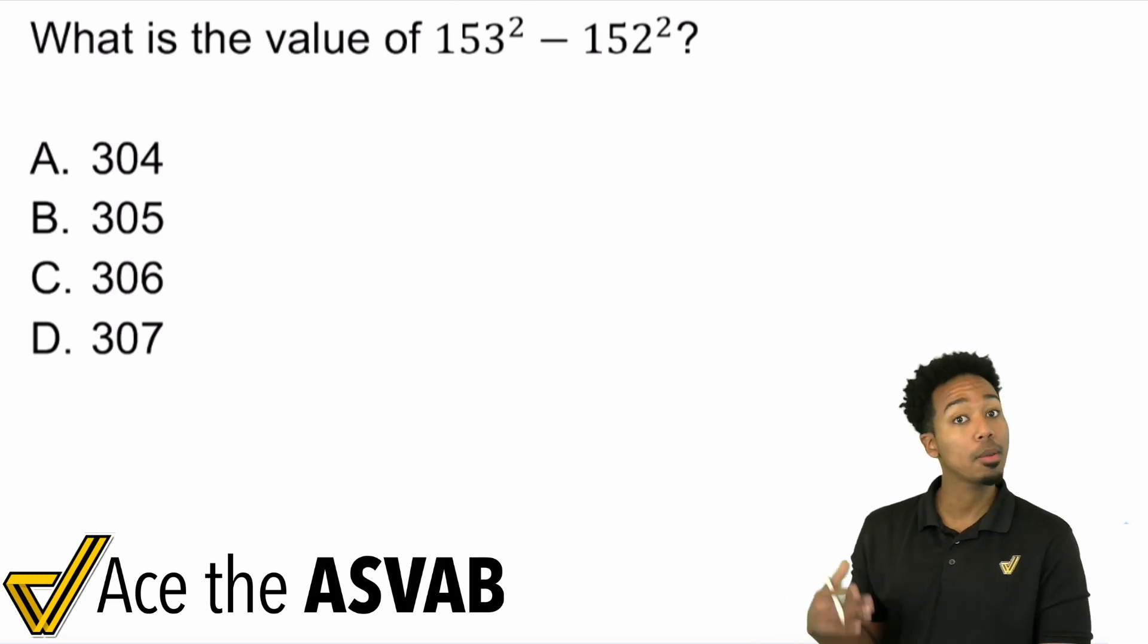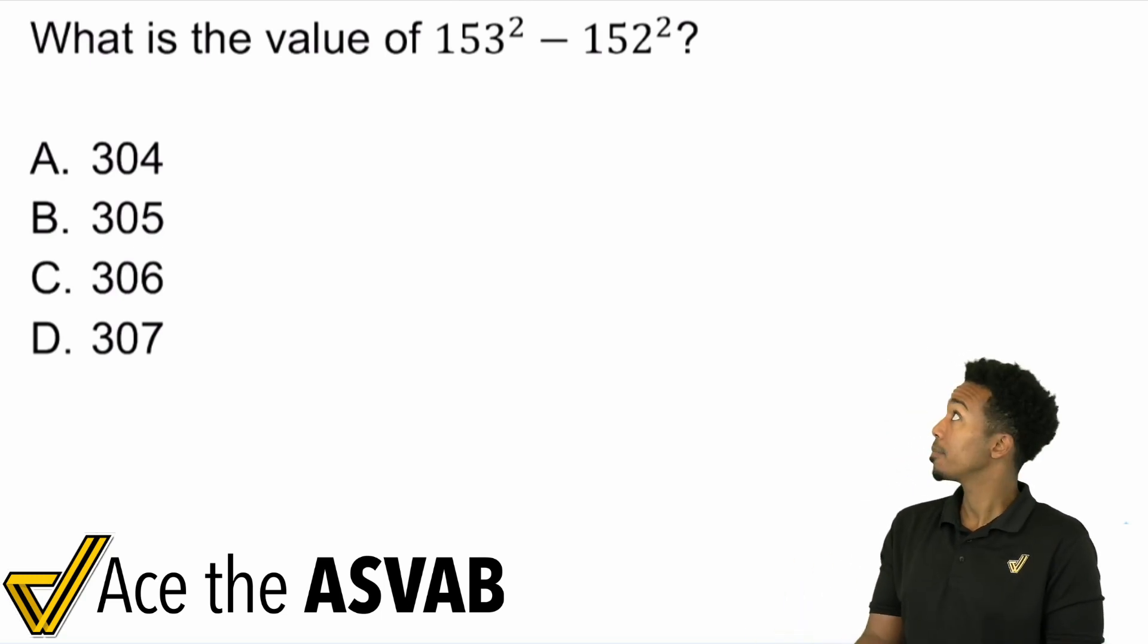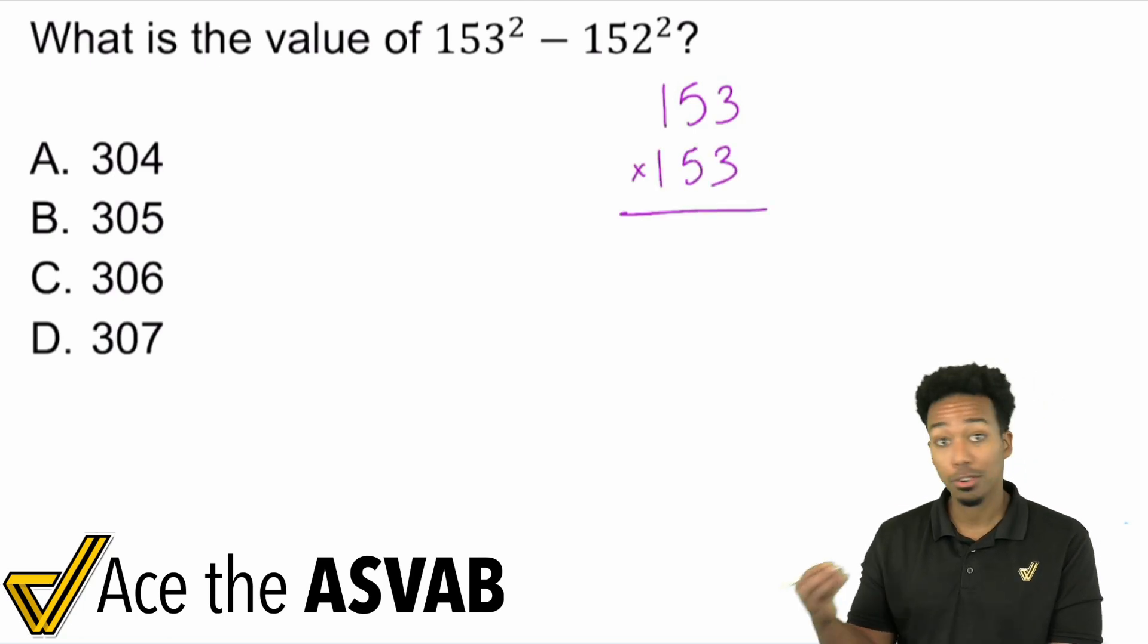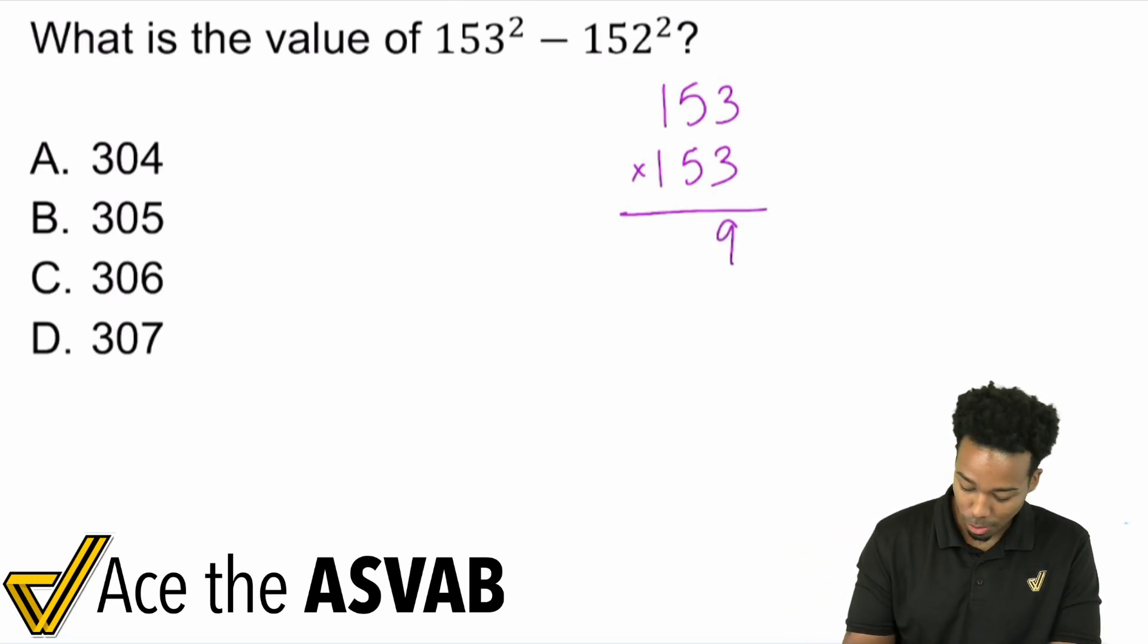So at face value, you might be looking at this and you might say, okay, 153 squared. Okay, great. Let's go ahead and start right off right away. Here we go. 153 squared means 153 times 153. And you're thinking, hey, I got to do this as quickly as possible, right? Three times three is nine. Five times three is 15. Carry the one.